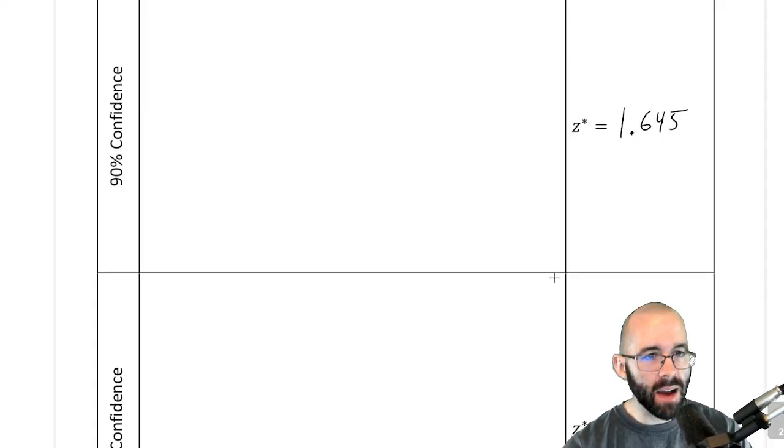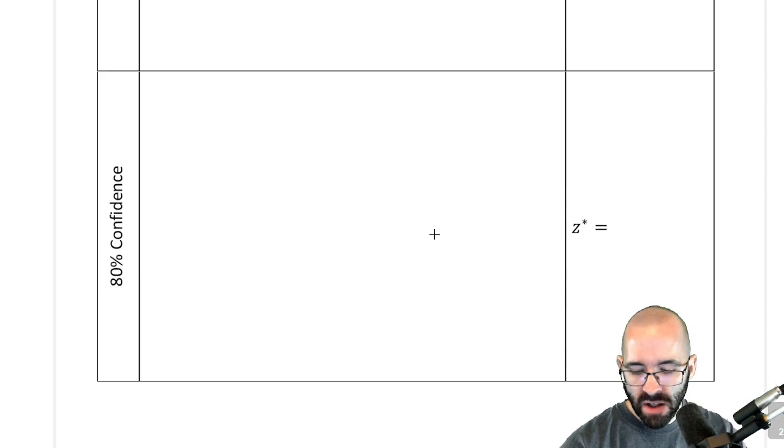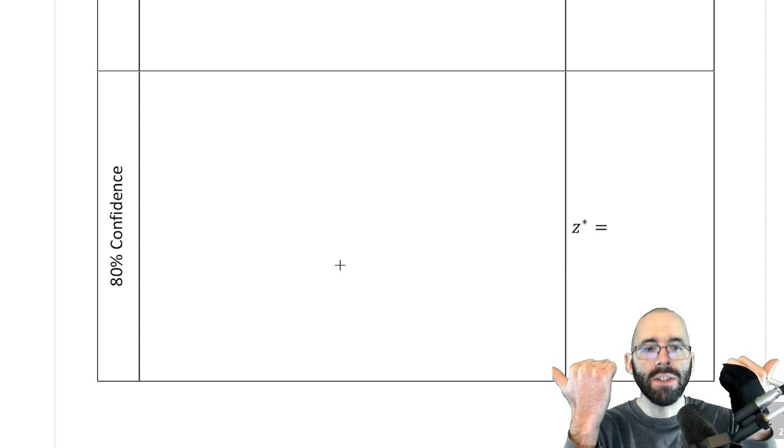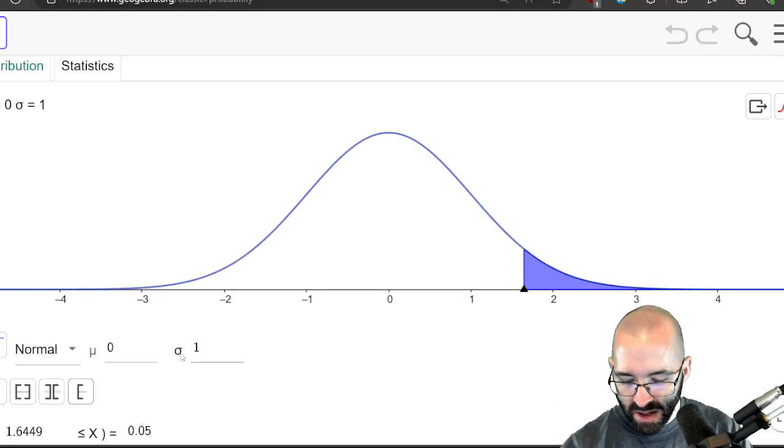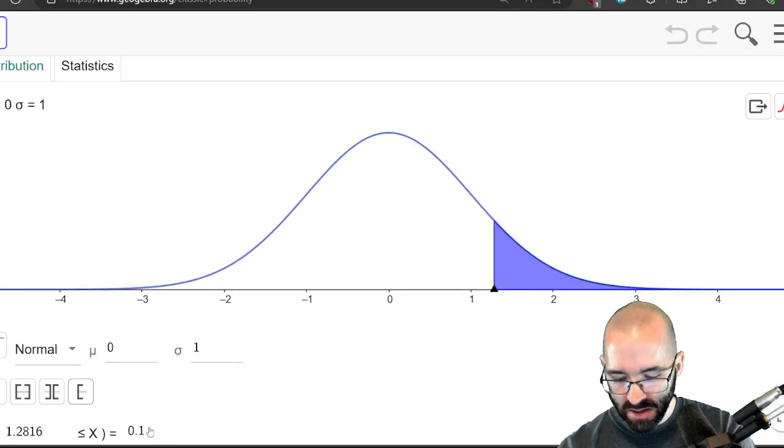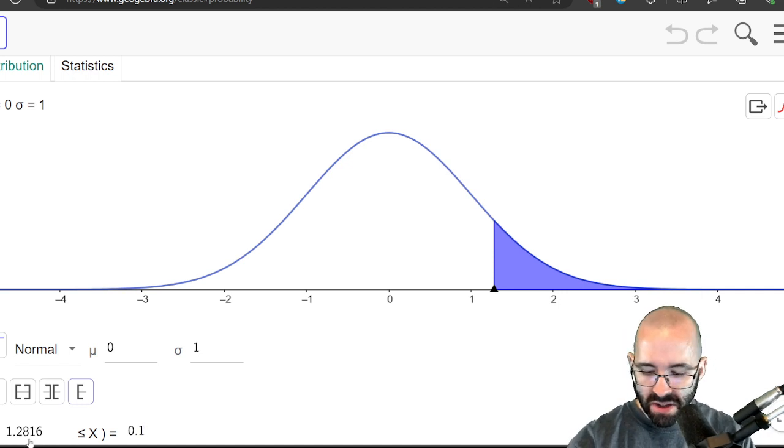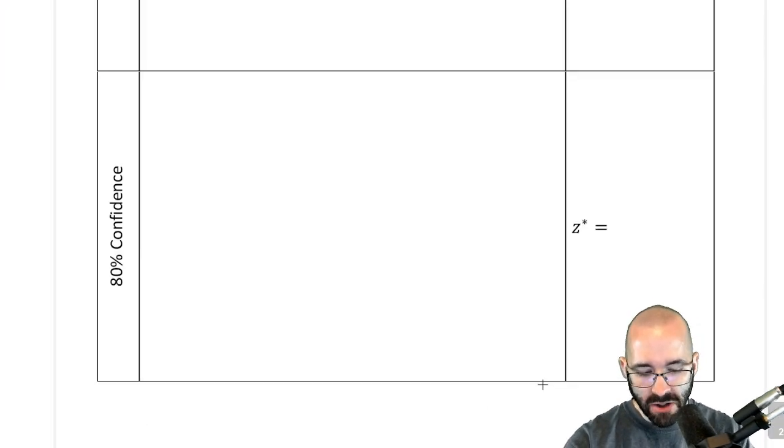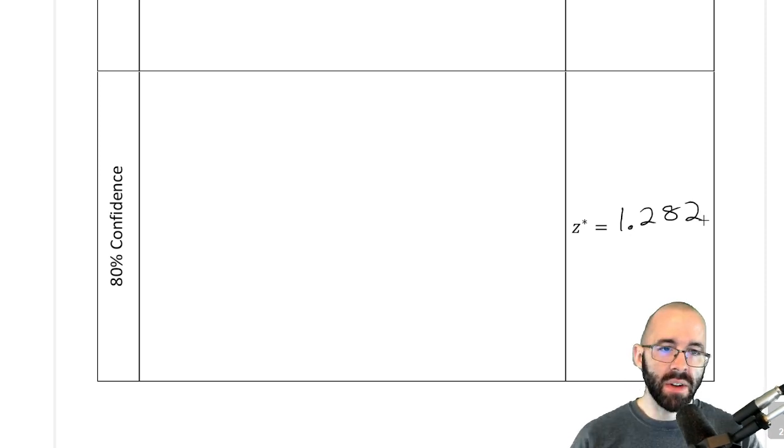Not going to do all the steps, but that's an outline for it. For an 80% confidence level, you'll have 20% on the outsides, each tail is 10%, and you'll use that to get the critical z-score of 1.282. And it's convention to round these to three decimal places, but you could use more precision if you wanted to.